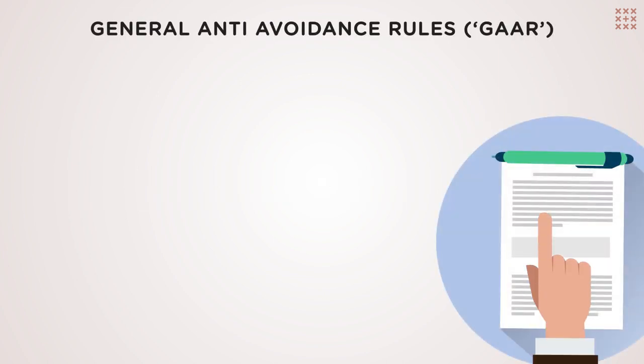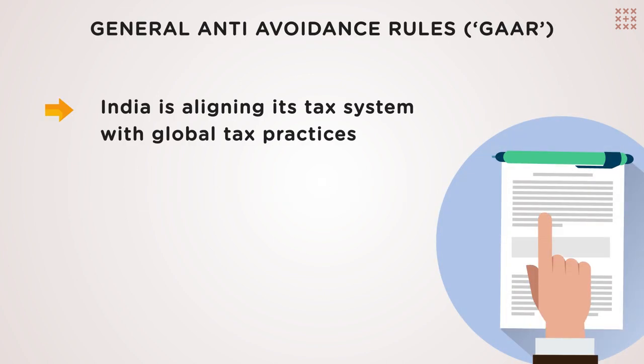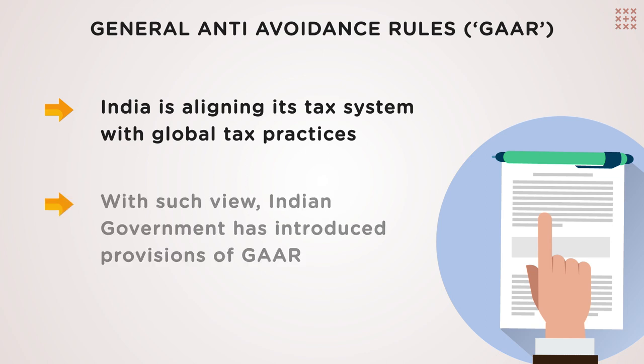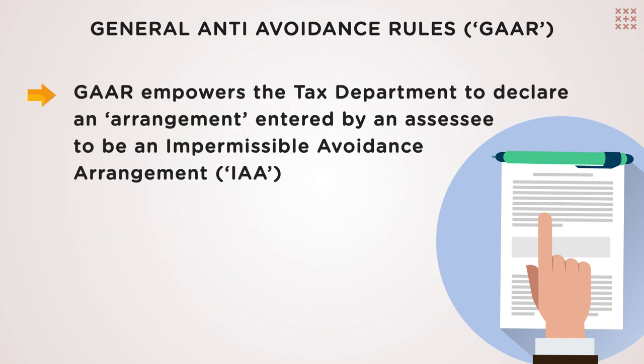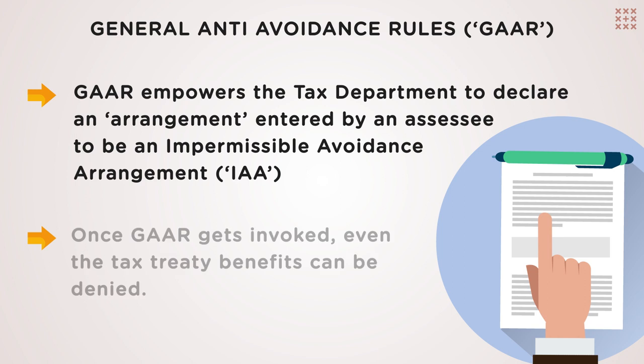Keeping in mind that India is aligning its tax system with global tax practices, the Indian government has introduced provisions of GAAR — the General Anti-Avoidance Rules. GAAR empowers the tax department to declare an arrangement entered into by an entity to be an impermissible avoidance agreement, shortened to IAA. Once GAAR gets invoked, even the tax treaty benefits can be denied.